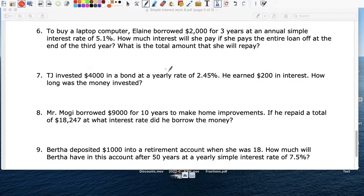TJ invested $4,000 in the bond. So $4,000 is your principal. The rate was 2.45%. So 0.0245. The T is how long was the money invested for. So that's unknown. So we leave that as T. And how much money did he earn? He earned $200 in interest. So that goes over here.